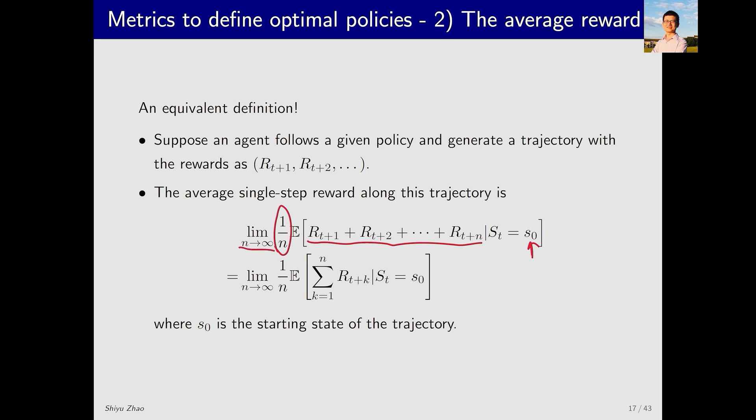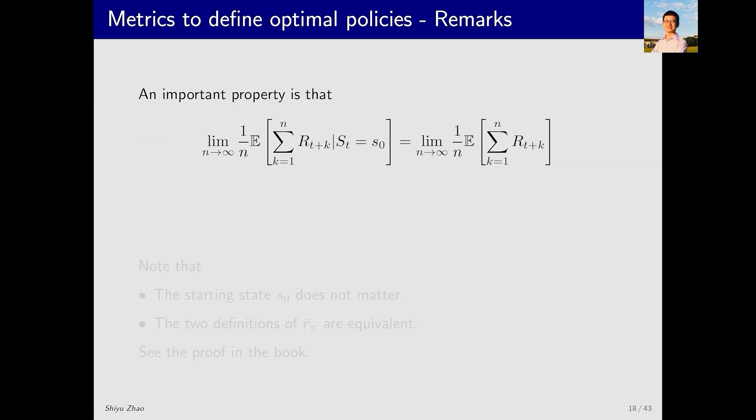This expression can be simplified to this form. What does this represent? It represents the average of the rewards after running for an infinite number of steps. This can be further rewritten in the following form. As you can see, I started from s_0 earlier, but now s_0 is gone. Why? Because after running for an infinite number of steps, the initial starting state no longer matters.